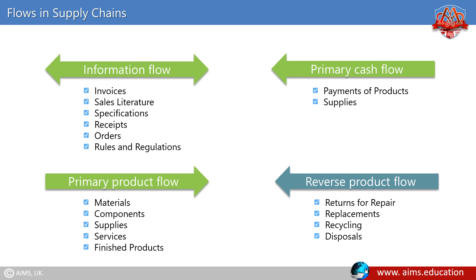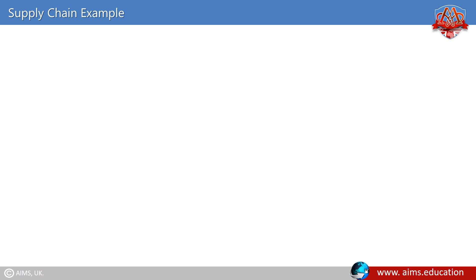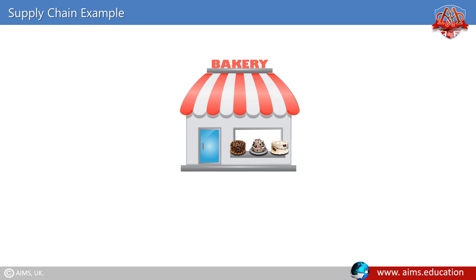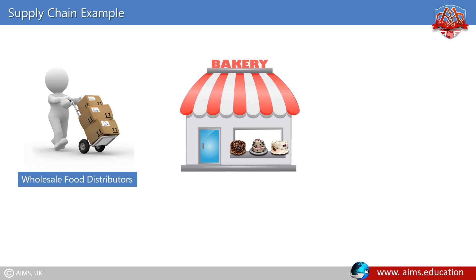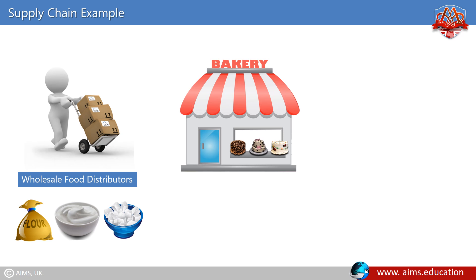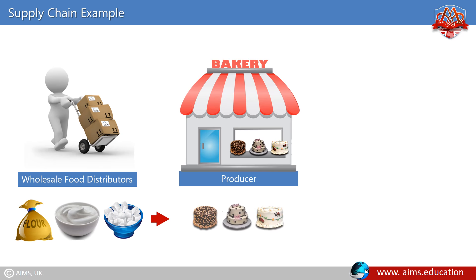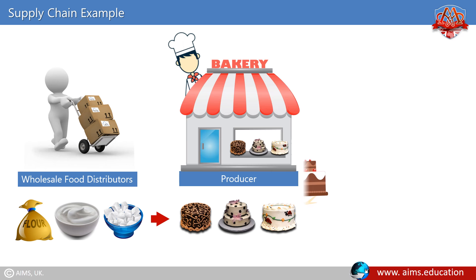Consider a supply chain model of a bakery that sells a variety of cakes. The baker is at one end of the supply chain. A supplier is a wholesale food distributor that provides ingredients such as flour, cream, and sugar. The bakery is the producer who turns those ingredients into a variety of cakes. The bakery is operated by an owner who is the retailer and who sells these cakes to the customer.